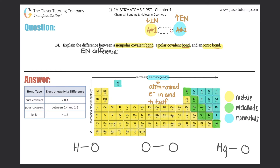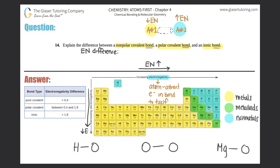Know the trend for electronegativity: as you go from left to right, electronegativity increases. Note that the noble gas group does not get counted because they are inert and don't react much — so the most electronegative element is actually fluorine, not the noble gases. As you go down a group, electronegativity decreases. That's why lithium has 1.0 and francium has 0.7.